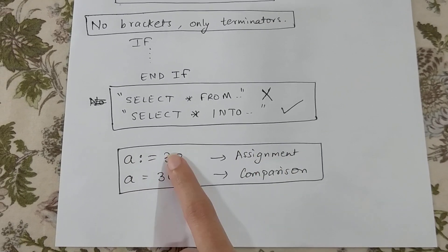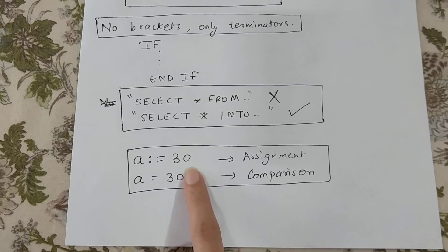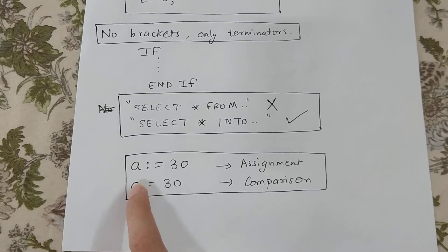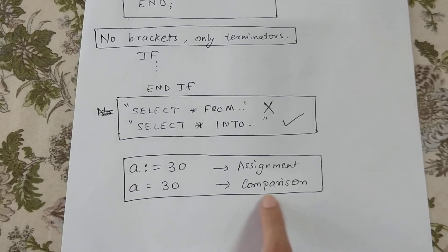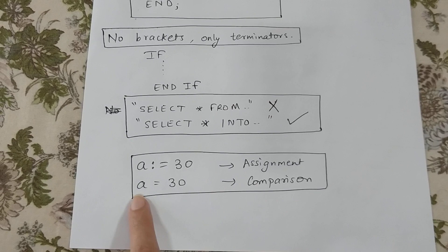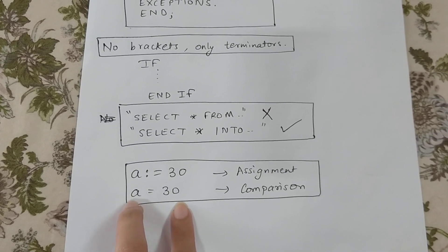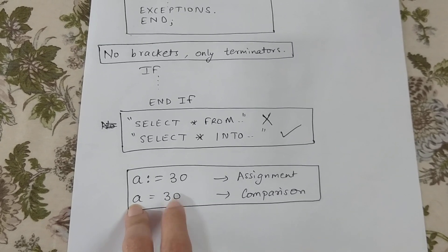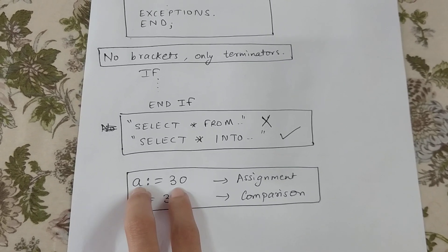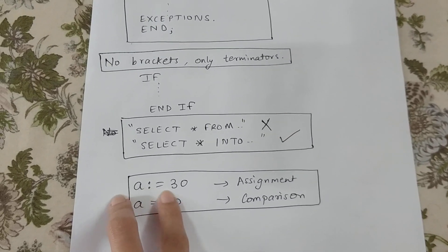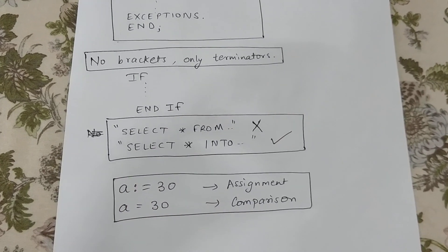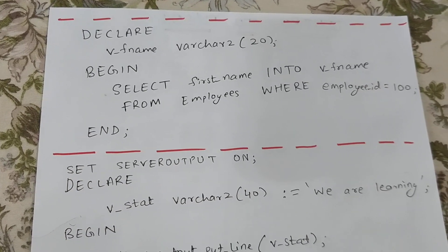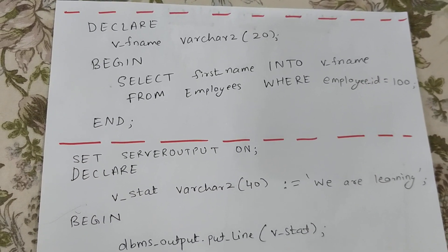Third, the assignment operator in PL/SQL is colon-equals (:=). So writing 'a := 30' means we are assigning the value 30 to variable a. Writing 'a = 30' is not assignment — it is a comparison that returns true or false. Whenever we want to assign a value, we use the := symbol.